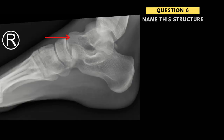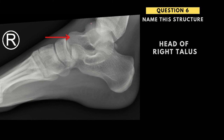Moving on to question number six, we're on the right ankle and right foot. We can see the distal tibia and our calcaneus. We're asked to label this bone specifically — this is the head of the right talus. You can see the talus coming over the top, this is the neck of the talus, and this is the head of the talus. If an arrow is pointing to a specific portion of the bone and they say 'label this structure,' they may want more detail — so you need to specify that this is the head of the right talus.